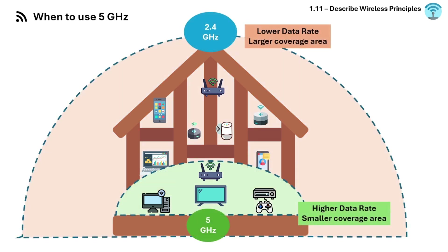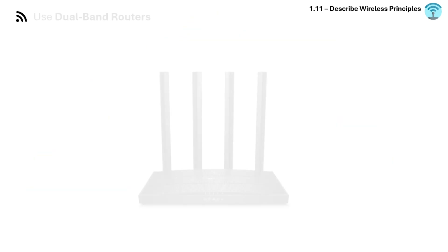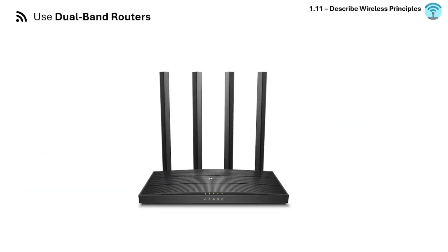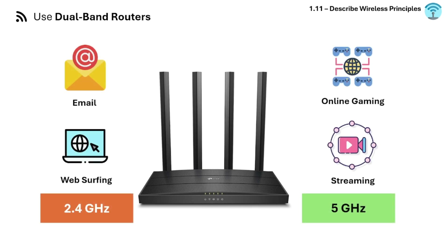To summarize the key differences: 2.4 GHz has a lower data rate but a larger coverage area, while 5 GHz has a higher data rate with a smaller coverage area. For best practice, modern routers offer both 2.4 GHz and 5 GHz simultaneously, and your device chooses the best band based on signal and needs.